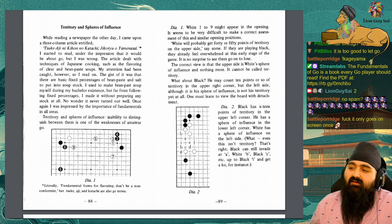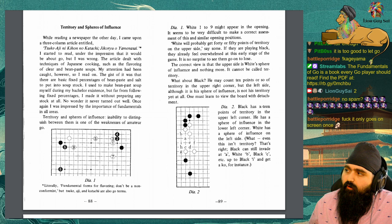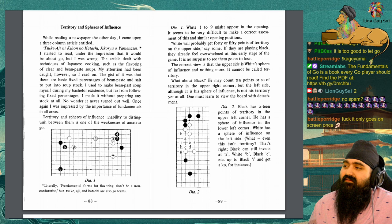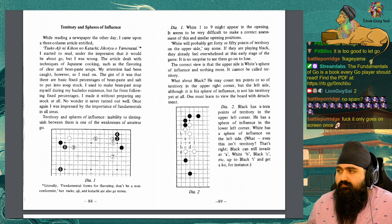Territory and spheres of influence. Inability to distinguish between them is one of the weaknesses of amateur go. Diagram 1. White 1 to 9 might appear in the opening. It seems to be very difficult to make a correct assessment of this in similar opening positions. White will probably get 40 or 50 points of territory on the upper side, say some. If they're playing black, then they already feel overwhelmed at this early stage of the game. It is no surprise to see them go on to lose.